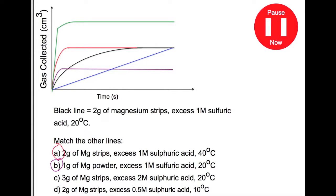For the next line we have 3 grams of magnesium strips and excess 2M sulfuric acid at 20 degrees, so similar conditions in terms of temperature. We have more magnesium and the acid is more concentrated so in terms of gas produced we will get more because we've got 3 grams so the only one that is more is the green line.